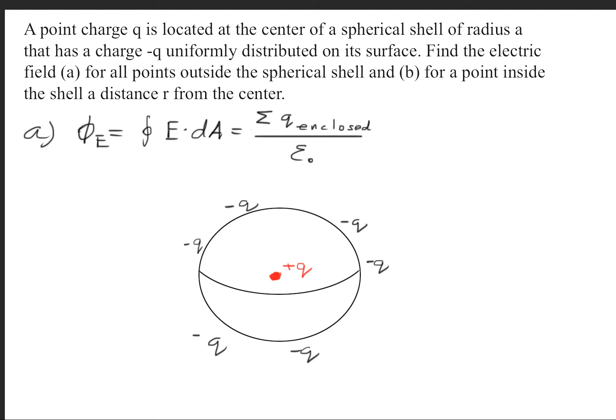We want to pick a point, any point outside the sphere here. I'll use this blue X. And now we want to draw a circle around here. This is known as a Gaussian surface.